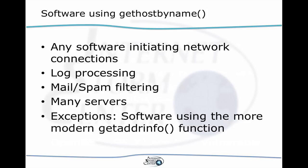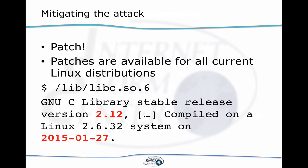As far as software goes, pretty much any software that uses the network is potentially vulnerable, because at some point it may take a hostname and convert it to an IP address. The question really is whether it's using gethostbyname or getaddrinfo. Log processing may be vulnerable because it sometimes converts hostnames to IP addresses. Mail spam filtering — for example, procmail — is vulnerable. So many servers and many clients are vulnerable, and because they are already connected to the network, this vulnerability can also be exploited remotely.